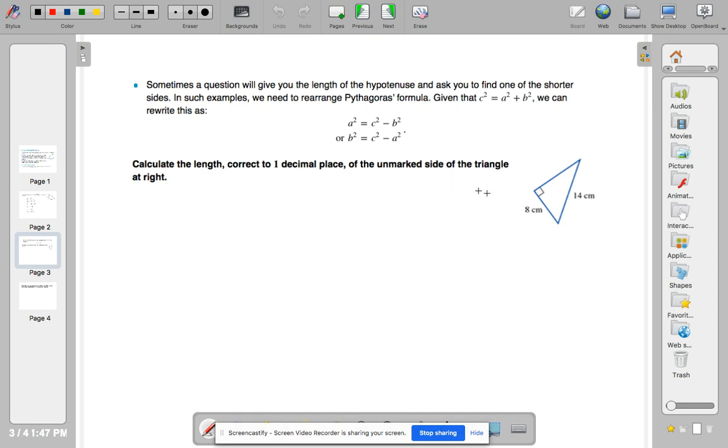Okay, sometimes a question will involve finding one of the shorter sides, and you're actually given the hypotenuse. You can change your formula around either to A squared equals C squared minus B squared or B squared equals C squared minus A squared. But to simplify it, if you're looking at one of the shorter sides, you square the hypotenuse and then subtract the square of the other side.